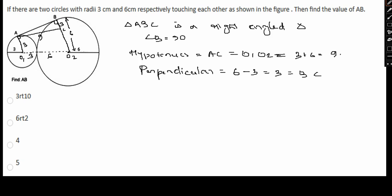This will be 9. Therefore AB can be given as root under 9 square minus 3 square. That is by using Pythagoras. So 81 minus 9, root under 72.